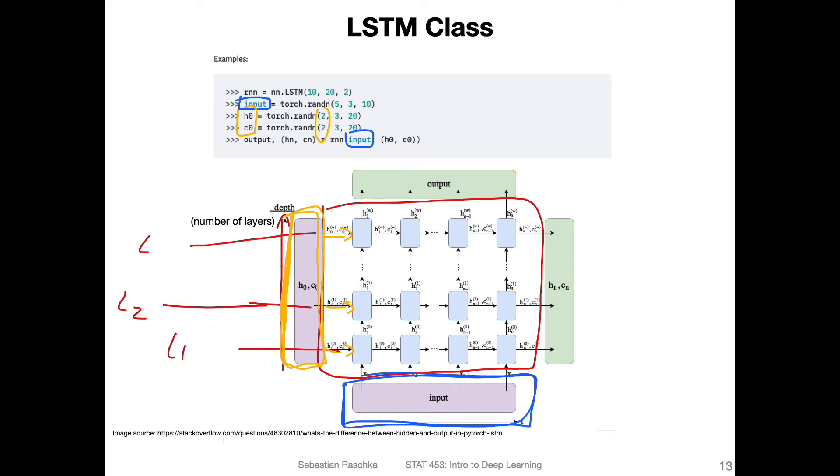And then the output from the RNN, this is also for each time step. So there's one output for each time step, similar to how there's one input for each time step.